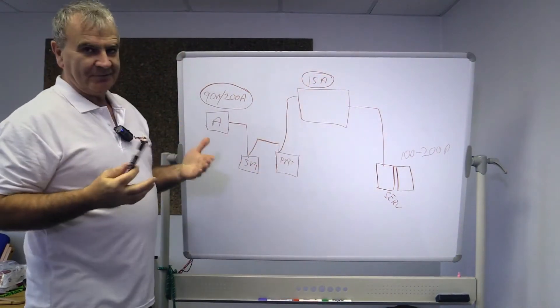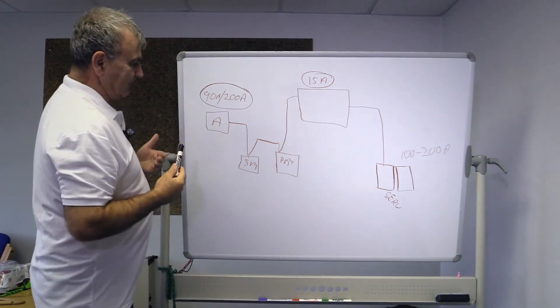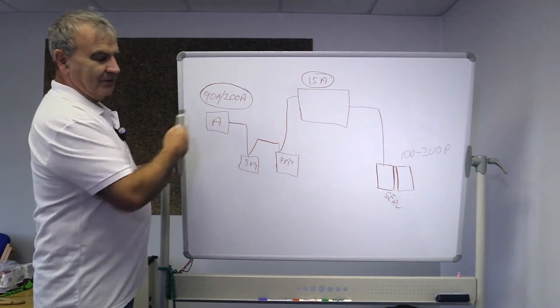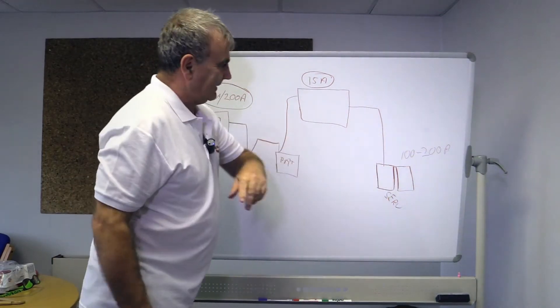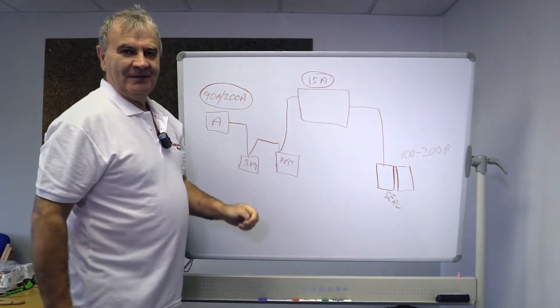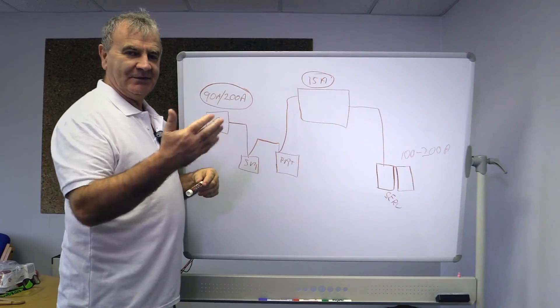Well what I don't understand and which is absolutely factual is this unit here in the middle I would call continuously rated at 15 amps. So who in their right mind designed a system which has a 90 to 200 amp alternator in this end, a couple hundred amps of batteries in this end, and stuck in the middle is a 15 amp continuously rated unit.